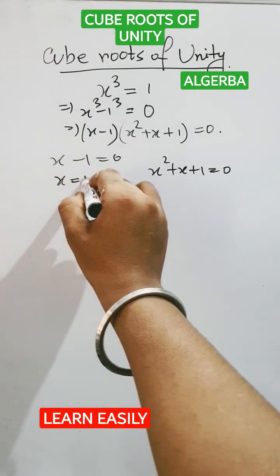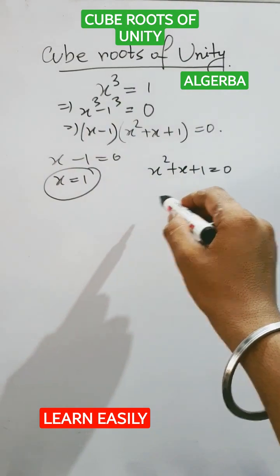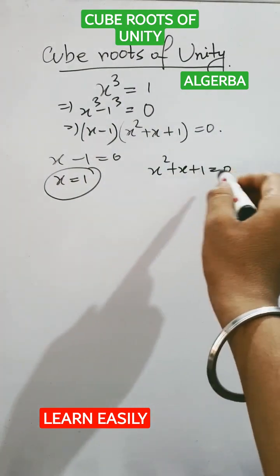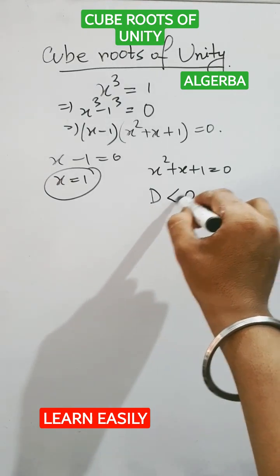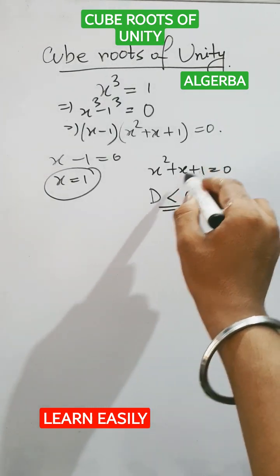So x equals 1, one of the roots of the equation. And the other part is a quadratic equation. So using the discriminant, discriminant is less than 0 here. Calculate it. So cube roots have two complex roots.